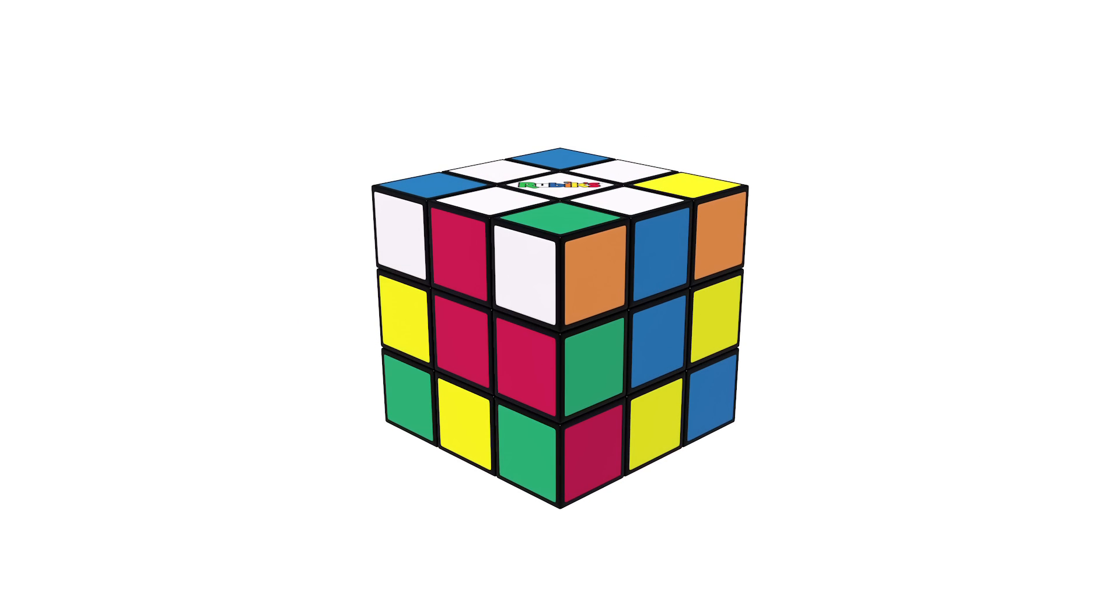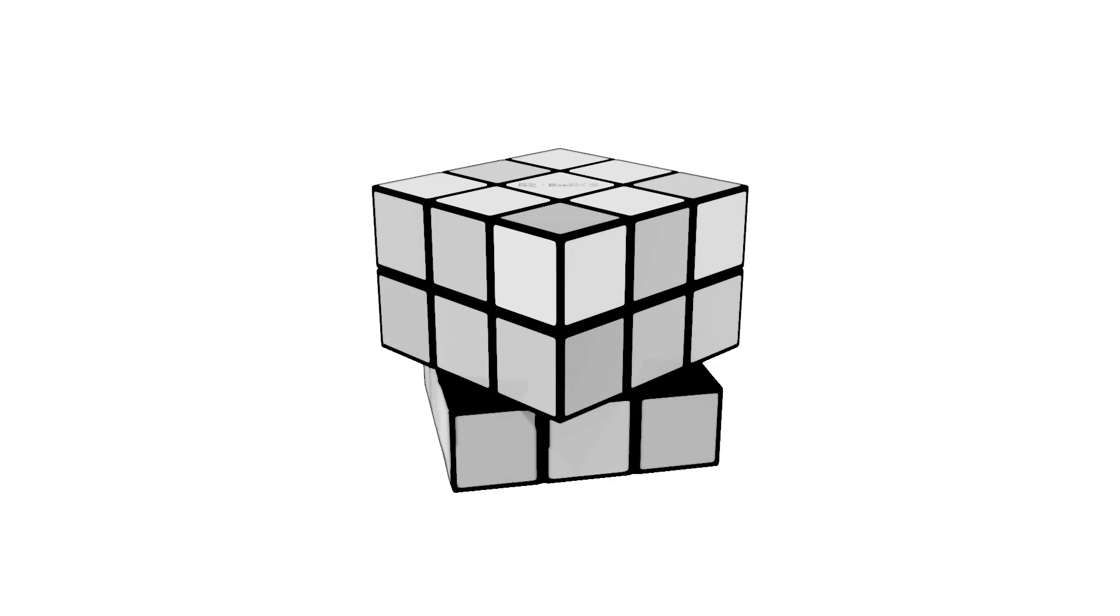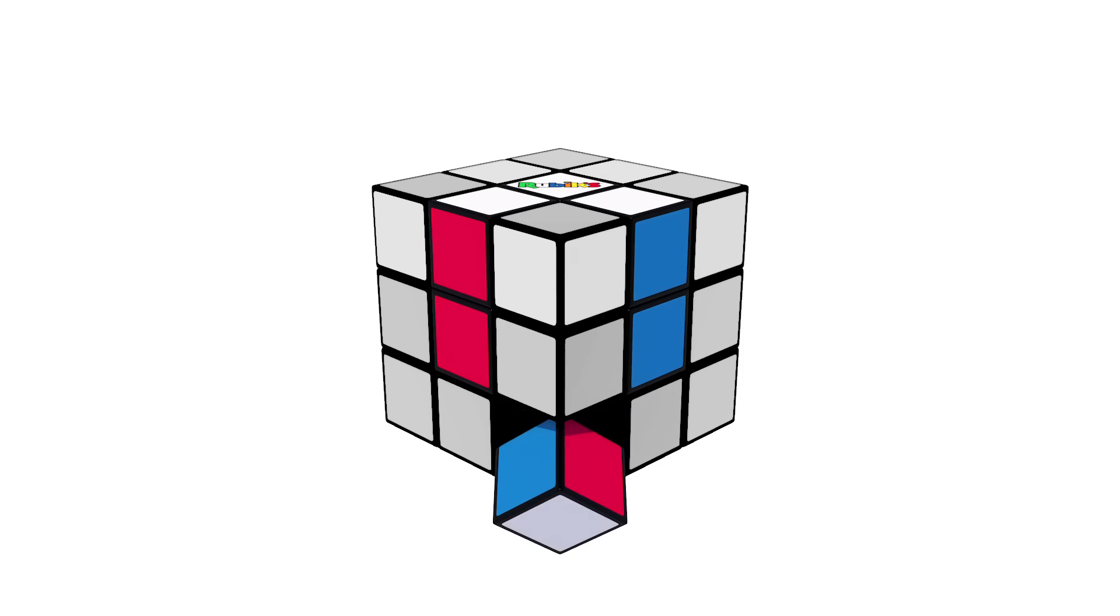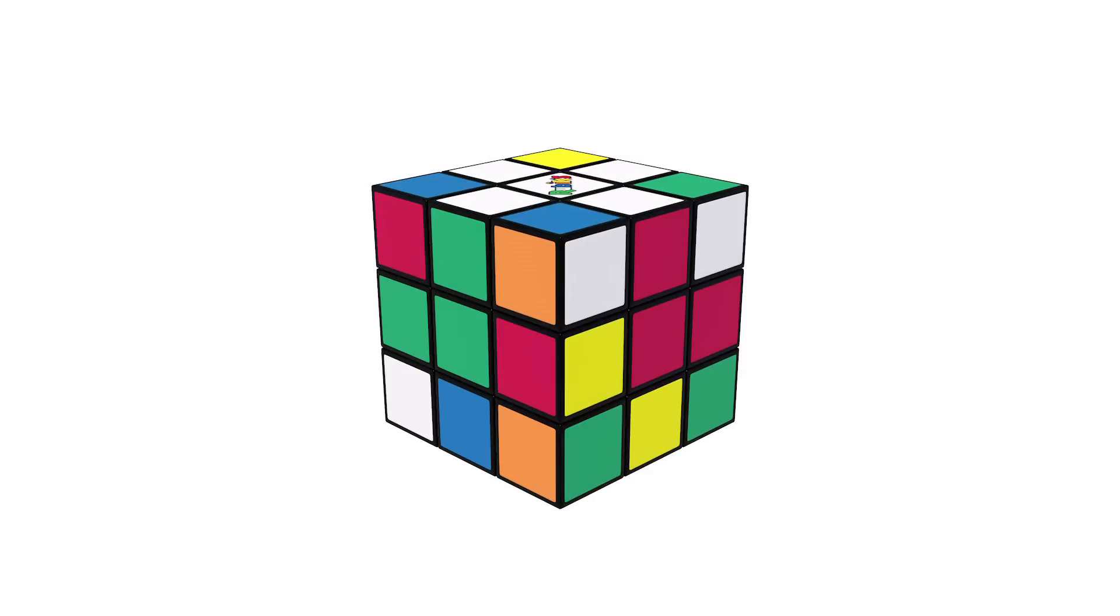So, once you know where it goes, position it directly underneath its final position. If the corner piece is already in the bottom layer, then simply rotate it till it's in the correct position, like this.